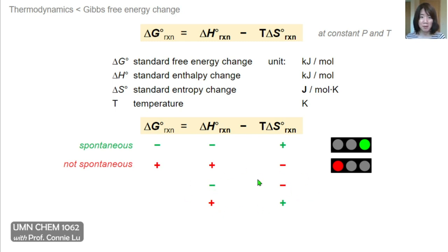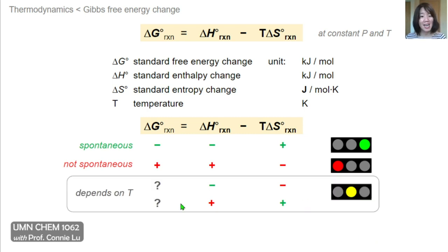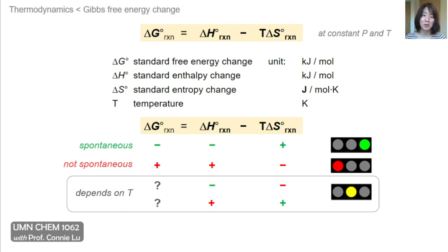In the next two scenarios, the thermodynamic parameters delta H and delta S are mixed — one is favored but the other is not. In the first example, we can have an exothermic reaction, which is favorable, but with a negative entropy change, which is not favored. Or we can have a positive entropy change, which is favorable, but an endothermic enthalpy change, which is disfavored. In these cases, delta G can have different signs — either positive or negative — depending on the temperature. These cases are represented by a yellow light: it might be spontaneous depending on temperature, but it could also be non-spontaneous.